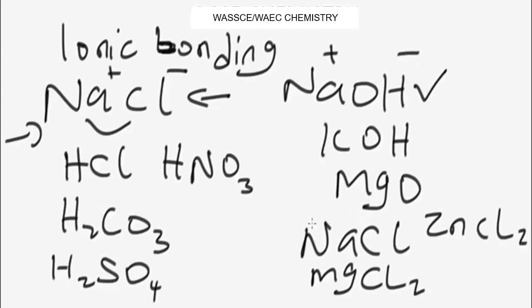Now let's look at the dots and cross diagrams showing how ionic compounds are formed. These dots and crosses show the arrangements of electrons in an atom or ion. Each electron is represented by a dot or a cross. These diagrams can show which atom the electrons in an ion originally came from.